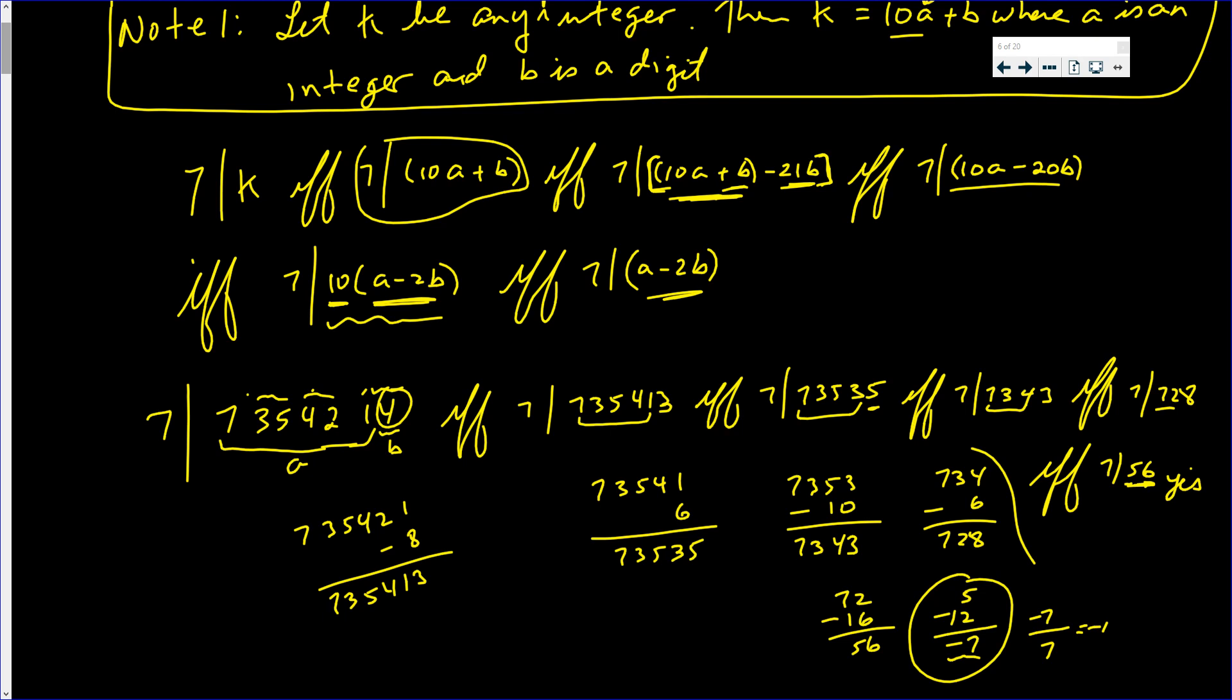So that means that 7 goes into all of these numbers. In particular, 7 goes into this number. That's the rule for 7.